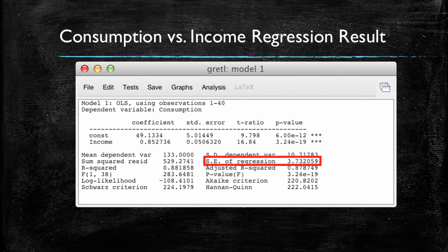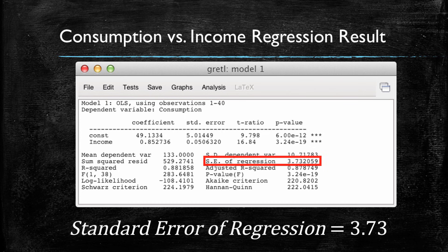Once again, this is output that Gretl and any other statistical package will also give you. And in our example, the standard error of the regression is 3.73. Once again, this number on its own tells us little, but if we compare two linear models, we will generally be choosing the one with the smallest standard error.